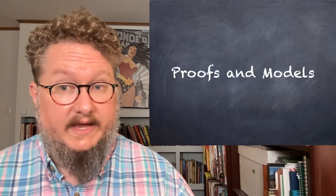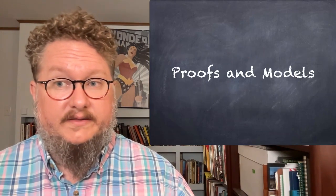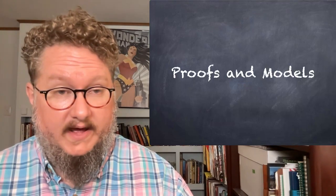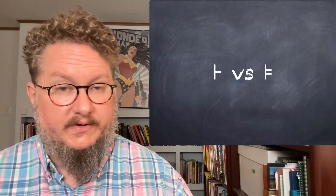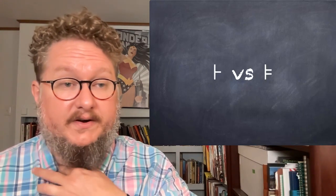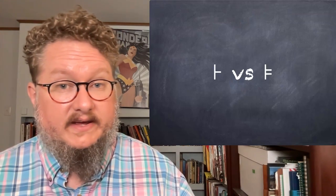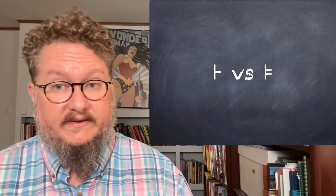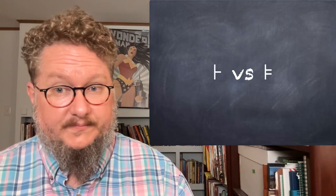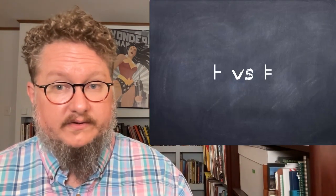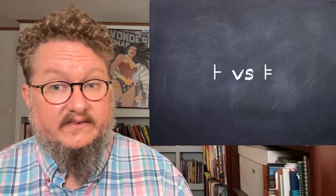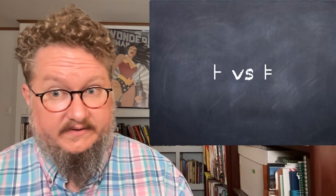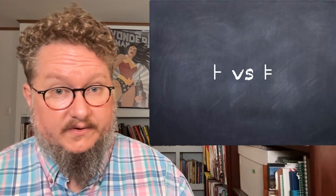I want to start by talking about the relationship between proofs and models. These are two very different ways of evaluating sentences of QL. We use these different symbols — the single turnstile and the double turnstile — to indicate when we're doing semantic and syntactic analysis. The single turnstile tells us that a proof is possible; this is a syntactic style of analysis. It's not the same as semantic entailment, which we write with the double turnstile.